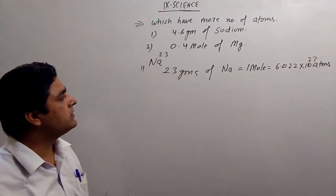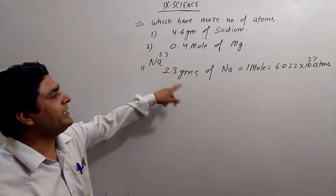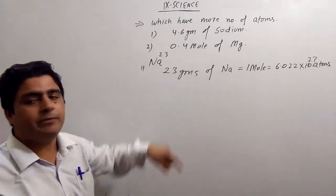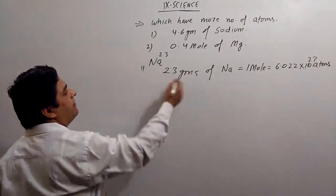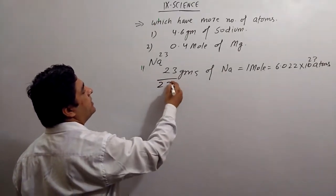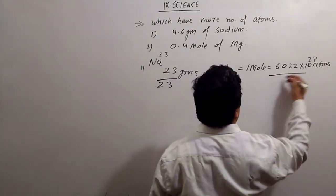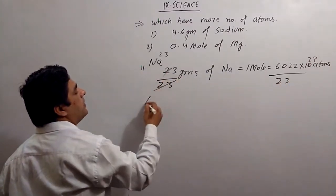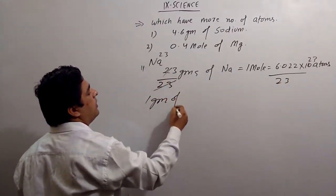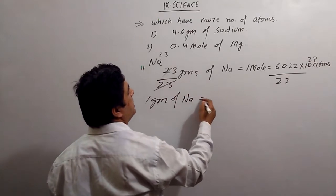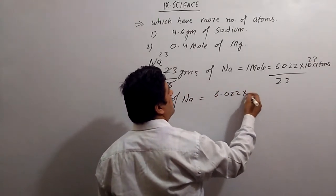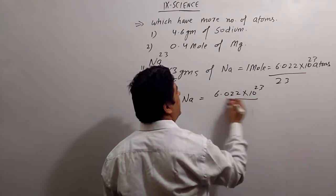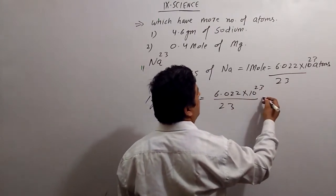23 grams of sodium contains that many atoms. Divide both sides by 23 to make it 1. So 1 gram of sodium equals 6.022 × 10^23 divided by 23 atoms.